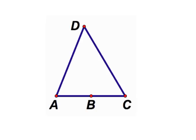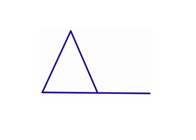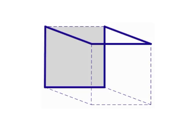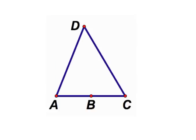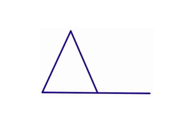Two sides with the common end points are non-collinear. Each side intersects exactly two sides, but only at the end points. A polygon is a closed figure with three or more co-planar segments called sides. Two sides with the common end points are non-collinear. Each side intersects exactly two sides, but only at the end points.